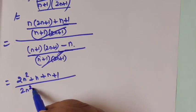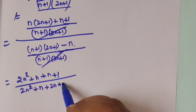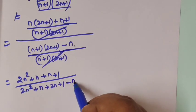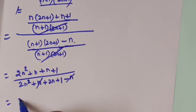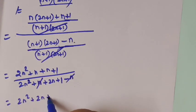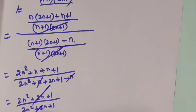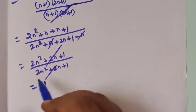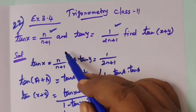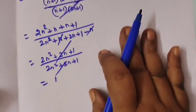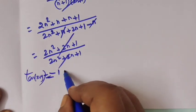So n into 2n gives 2n squared, plus 1 into n gives n; then 1 into 2n gives 2n, plus 1 into 1 gives 1. After cancelling the LCM, minus n. The plus n and minus n cancel, leaving 2n squared plus 2n plus 1 by 2n squared plus 2n plus 1. We can cancel these, equal to 1. So the value of tan of x plus y equals 1.